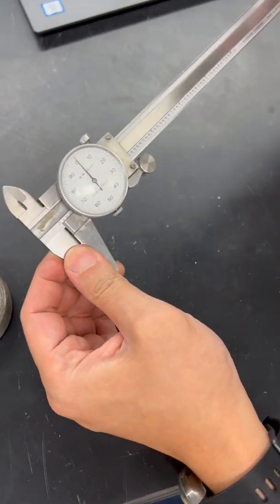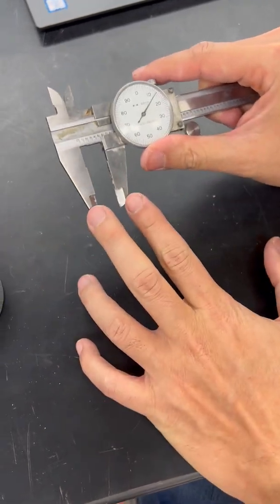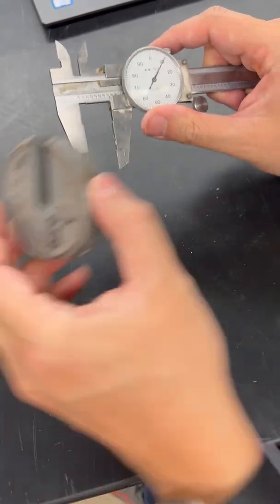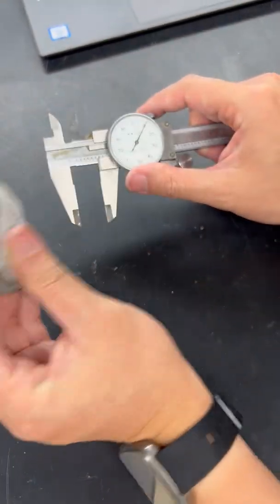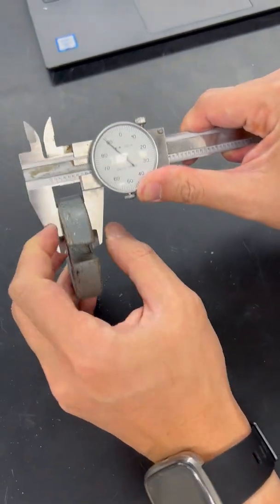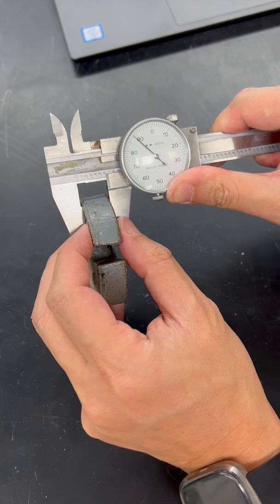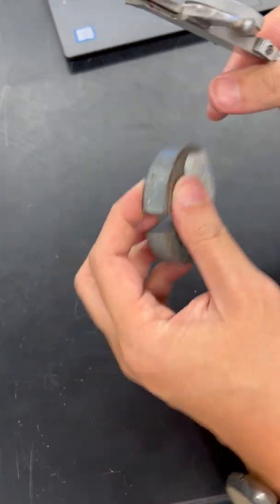First, if we want a thickness, we can use this part. For example, if you want to measure the thickness of this dead weight here, we can just put it in like this, then we can measure the thickness of this dead weight right there.